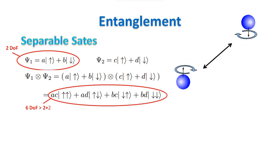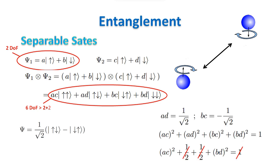This has consequences. One important consequence is that while it is always possible to combine states, it is not always possible to factorize a state into its components. For example, consider this state, which is called the singlet state.